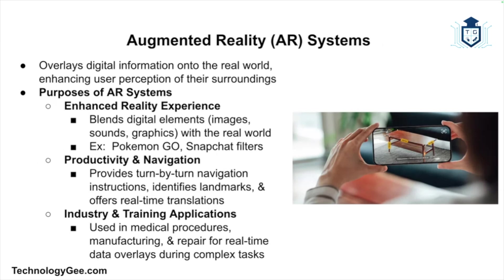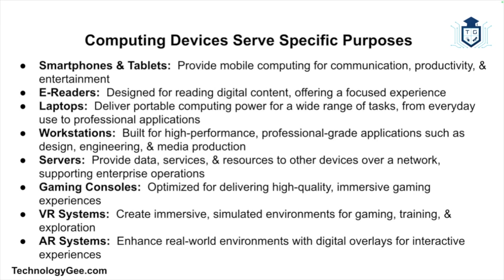Finally, let's talk about augmented reality systems. An AR system overlays digital information onto the real world, enhancing the user's perception of their surroundings. AR blends digital elements like images, sounds, and graphics with the real world, as seen in applications like Pokémon Go or Snapchat filters. AR can also be used for practical applications like providing turn-by-turn navigation, identifying landmarks, or offering real-time translations. It is also used in industries for real-time data overlay during complex tasks such as medical procedures, manufacturing, and repair.